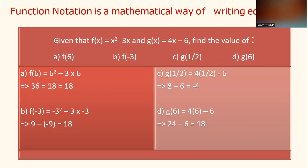Question C. g(X) equals 4X minus 6. So given g(1/2), this equals 4 multiplied by 1/2 minus 6. So you have 2 minus 6 equals negative 4.